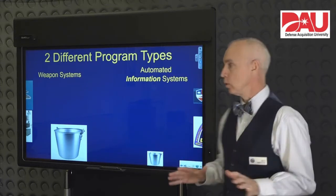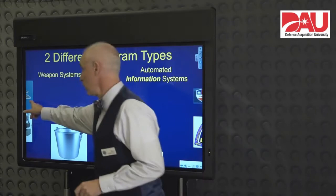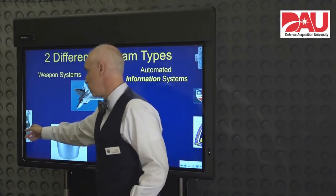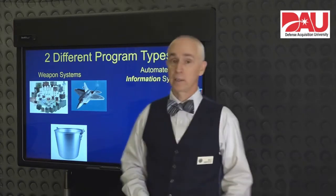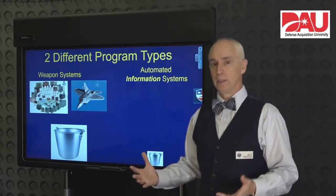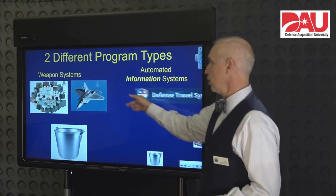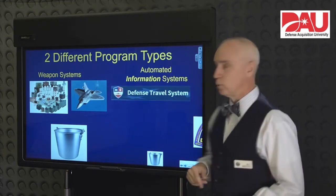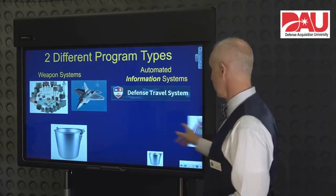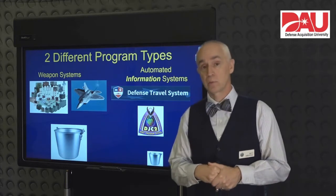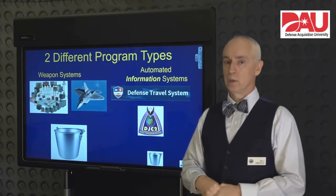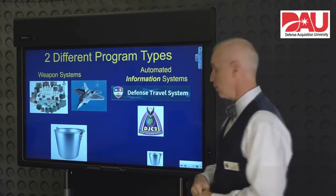First, we've got to look at what type of system you are. You have two different designations. One is weapon systems — that's easy to understand with something like your F-22, but it's also a pretty big bucket because things like power generation systems are also considered weapon systems. The other designation is automated information systems, whose purpose is to deal with information. Things like your Defense Travel System or command and control systems like DJC-2 would fit into the automated information system designation, and they have different rules in terms of dollar amounts.